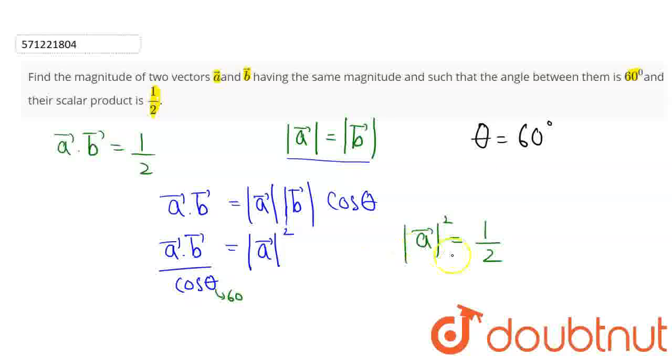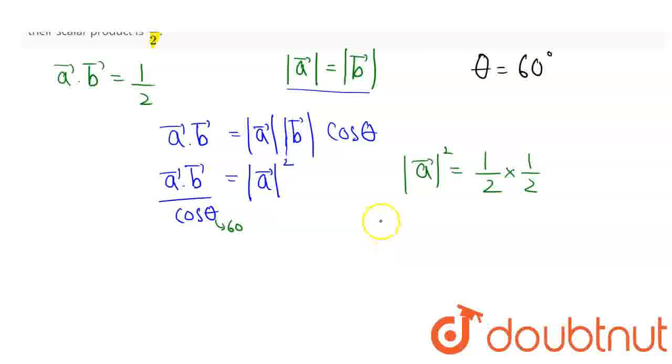So cos 60 will be 1 by 2. So this will be multiplied by half. So magnitude of A vector square is, so this will be 1 by 4.